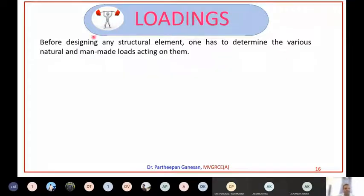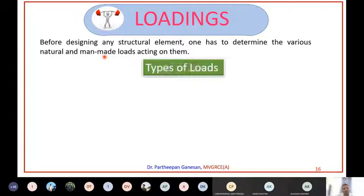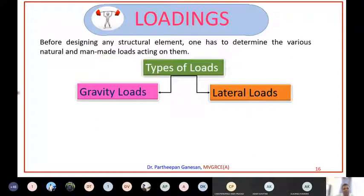One has to determine various natural and man-made loads acting on the structural elements. Natural loads include wind load, snow load, rain load, and earthquake load. Man-made loads include live loads and the weight of all the materials used - these are all man-made loads acting on the structure. The types of loads can be classified as gravity loads and lateral loads.